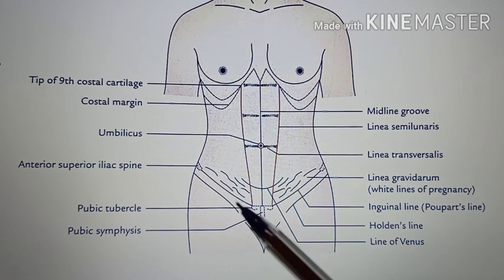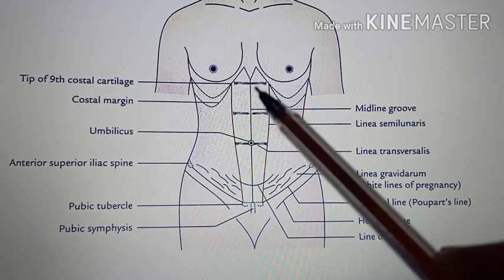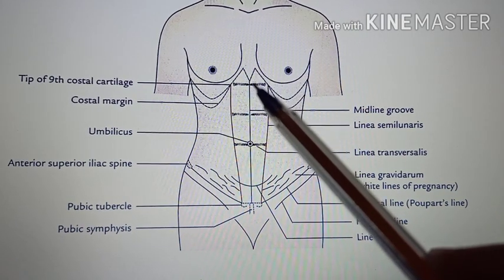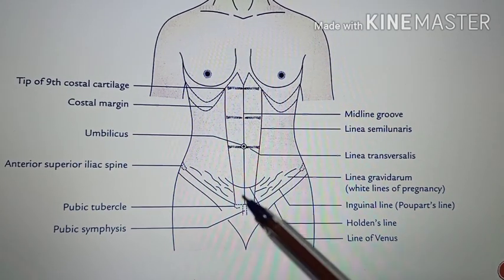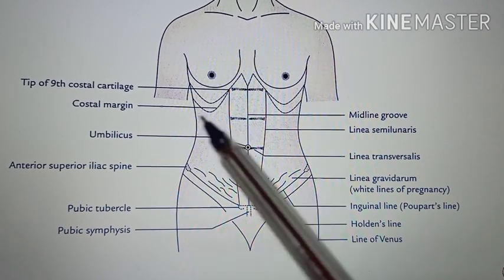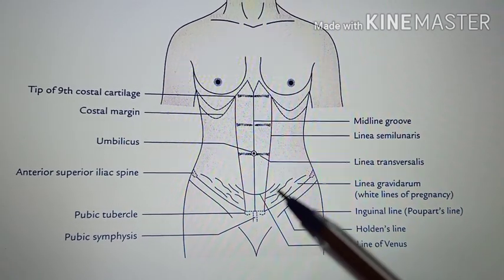Another structure to know is the linea semilunaris. It is the curved furrow which extends from the tip of the 9th costal cartilage up to the pubic tubercle. In this picture, the linea alba is the structure present in the midline, attached above to the xiphoid process and below to the pubic symphysis, dividing the anterior abdominal wall into two equal halves — right and left.